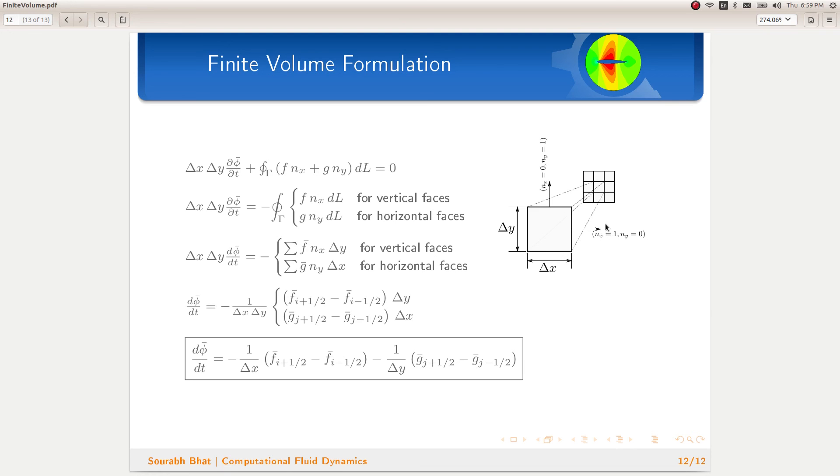Now, recognizing the fact that nx is equal to positive one for the right face and nx is negative one for the left face. Similarly, ny is positive one for the top face and ny is negative for the bottom face. We get this equation. This results in this final ordinary differential equation, which we can solve using the Runge-Kutta time integration method as we did in the one-dimensional case.